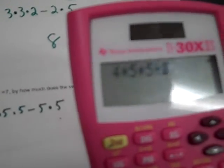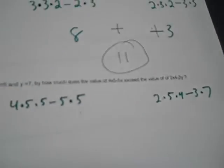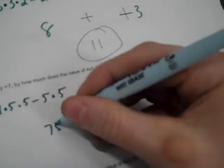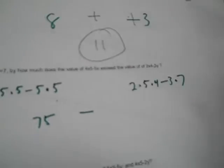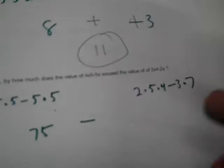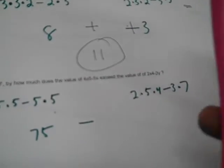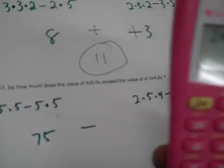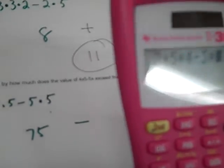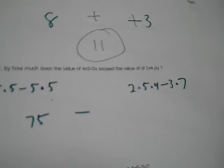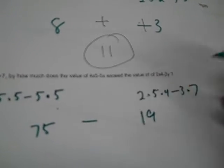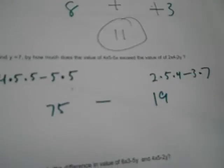And here we've got 2x, so times 5, then 4 times 4, minus 3y, so minus 3, and it's times 7. So here I've got 4 times 5 times 5 minus 5 times 5, and that's 75. Minus, how much does it exceed it? 2 times 5 times 4 minus 3 times 7. I got 19. So you're taking 75 minus 19. That's 56.